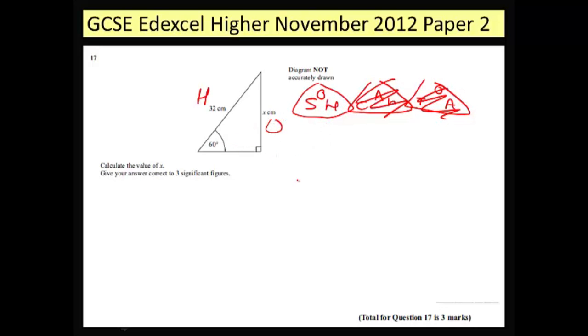So I'm trying to work out what the opposite is. The opposite is equal to sine of the angle times by the hypotenuse.